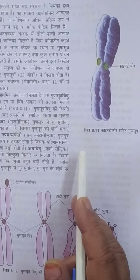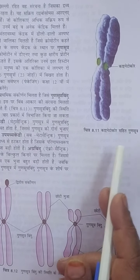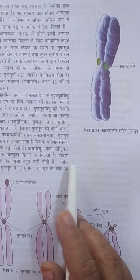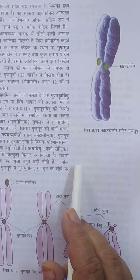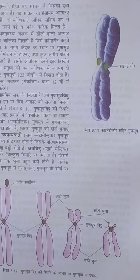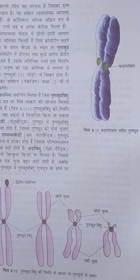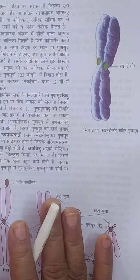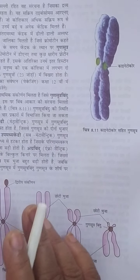Haploid chromosomes are not in pairs — for example, 9, 11, 21, 33, etc. The number of chromosomes is always constant in all somatic cells of all individuals of a species. For example, in human beings there are 23 pairs of chromosomes in somatic cells — that is the diploid number.